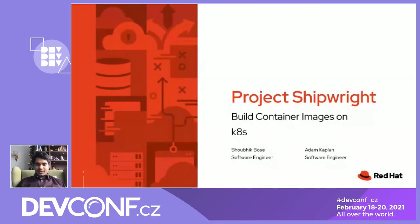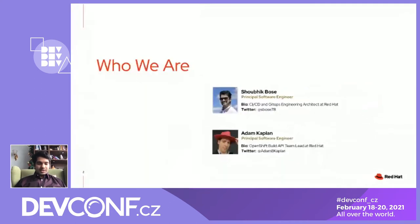Hey everyone. I'm Shobhik, and with me I have Adam Kaplan. We're Software Engineers at Red Hat, and we'll be talking about our journey on building container images on Kubernetes. I work as an architect in the CI, CD, and GitOps space at Red Hat. And Adam works as the OpenShift Build API team lead at Red Hat. So we've got good experience here between doing CI and doing builds the old way and the new way.